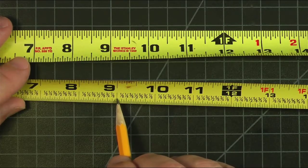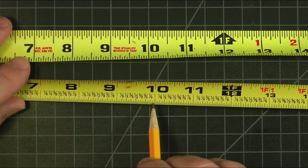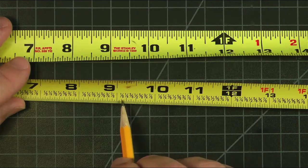So between this inch mark and this inch mark in 32nds, there are 32 little yellow spaces between the lines.